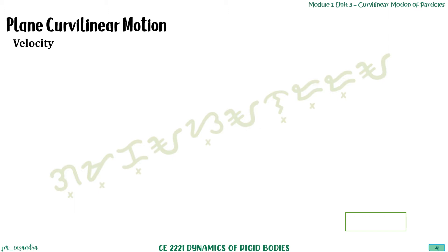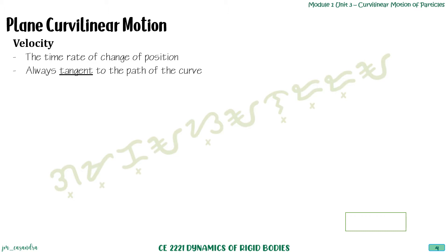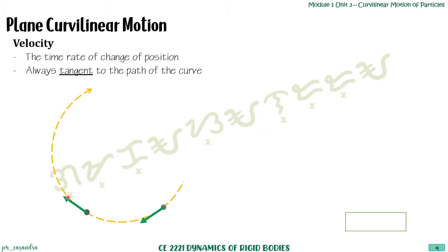The next concept is velocity, defined as the time rate of change of position. For curvilinear motion, the velocity is always tangent to the path of the curve. At any point along the path, its velocity will be tangent at that point. As the particle moves, the direction of velocity will vary depending on its position, but it will always be tangent to the path.